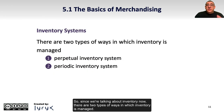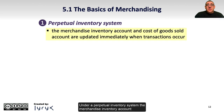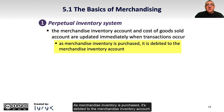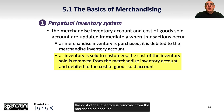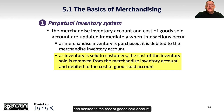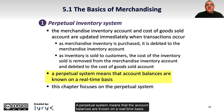Since we are talking about inventory, there are two types of ways in which inventory is managed. The first is through a perpetual inventory system and the second is a periodic inventory system. Under a perpetual inventory system, the merchandise inventory account and cost of goods sold account are updated immediately when transactions occur. As merchandise inventory is purchased, it is debited to the merchandise inventory account, and as inventory is sold to customers, the cost of the inventory is removed from the merchandise account and debited to the cost of goods sold account. A perpetual system means that the account balances are known on a real-time basis, and this chapter focuses primarily on the perpetual system.